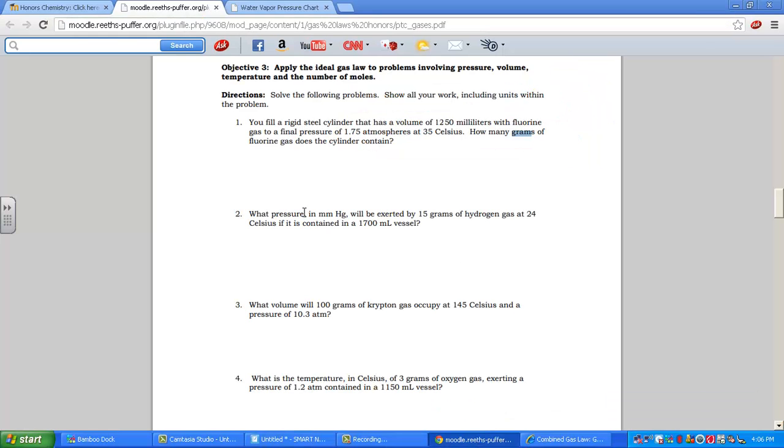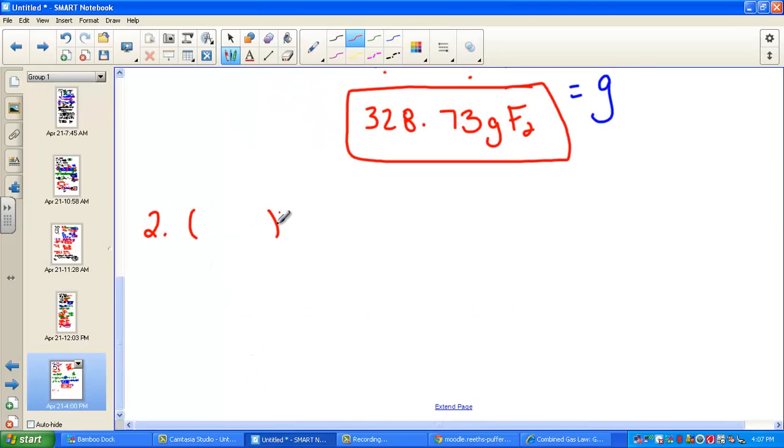Second problem. We want to find pressure. Target is in millimeter mercury. Given 15 grams of hydrogen, 24 Celsius, and we're in a 1700 milliliter vessel. I'm going to go back and just get my parentheses ready. I just like to do it that way. Here's my PV equals NRT. Now that you've read your story problems, plunk in that correct number for the variable. We're looking for pressure. We have to end in millimeter of mercury, so now I know my gas constant, 62.4. I've got to match the pressure by correct R.